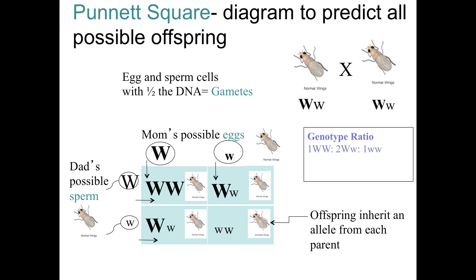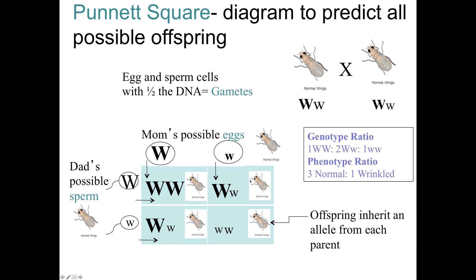Looking at genotype ratios and phenotype ratios: one out of four possible offspring were homozygous dominant, two out of four were heterozygous, and one out of four was homozygous recessive — a 1:2:1 genotype ratio. For phenotypes, three out of four had normal-shaped wings to one with wrinkled-shaped wings — a 3:1 phenotype ratio.